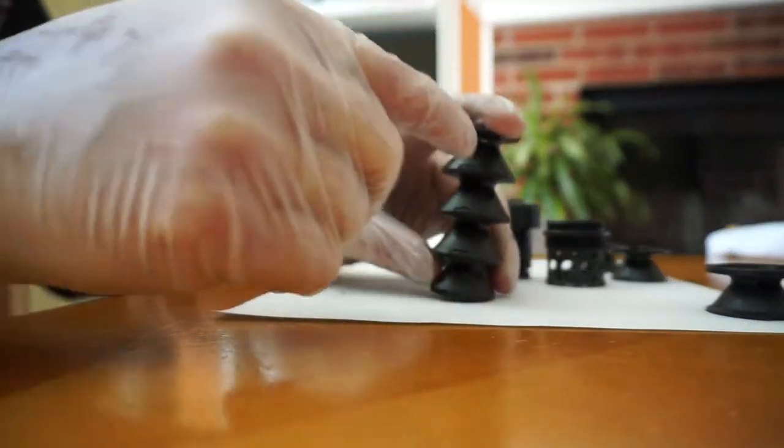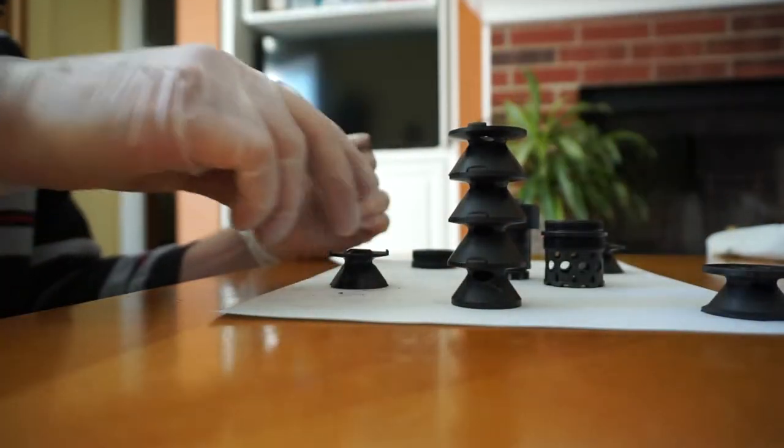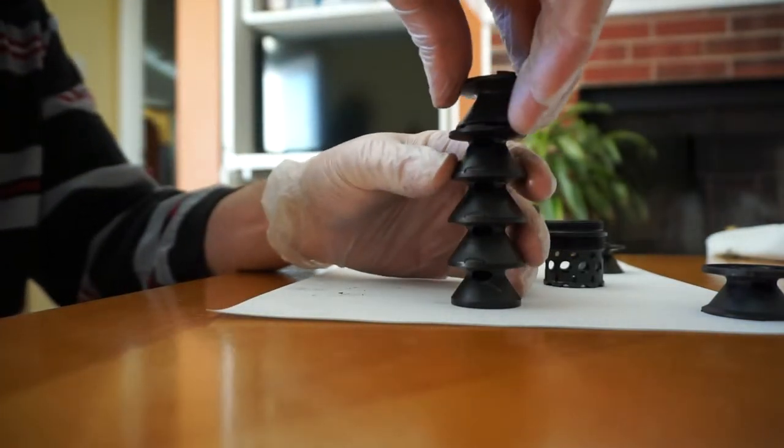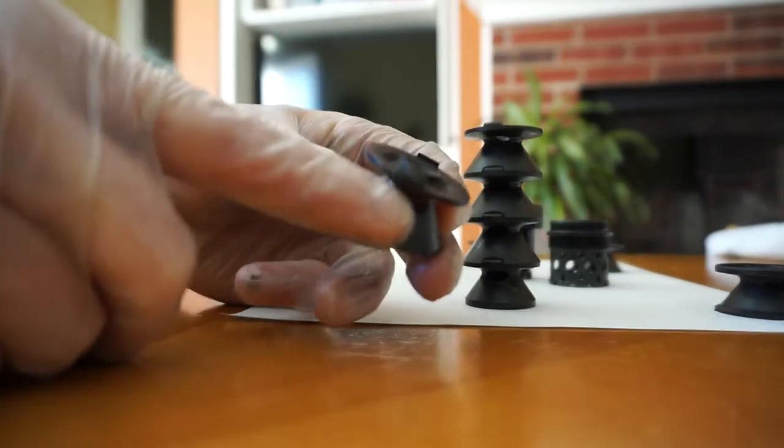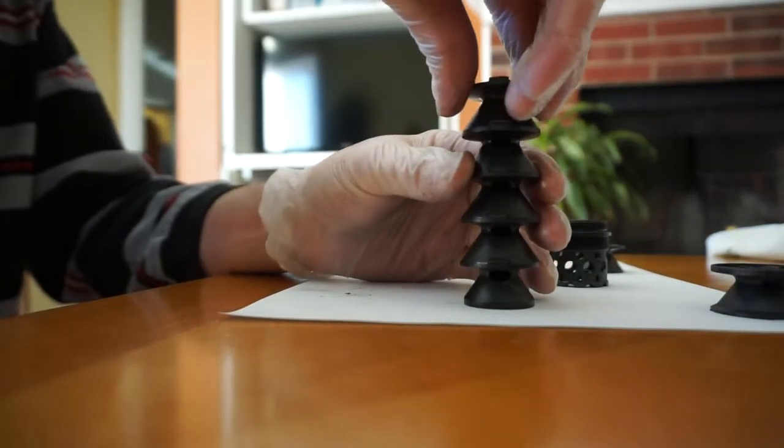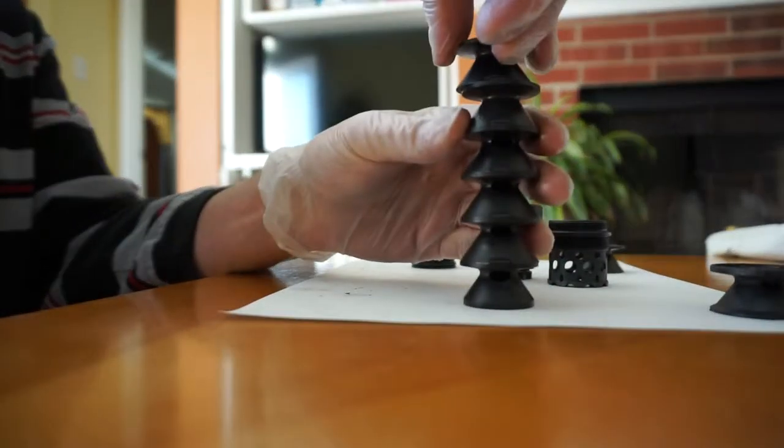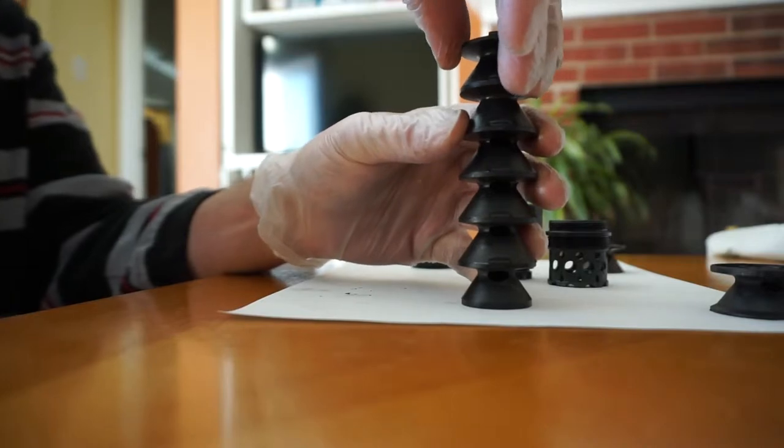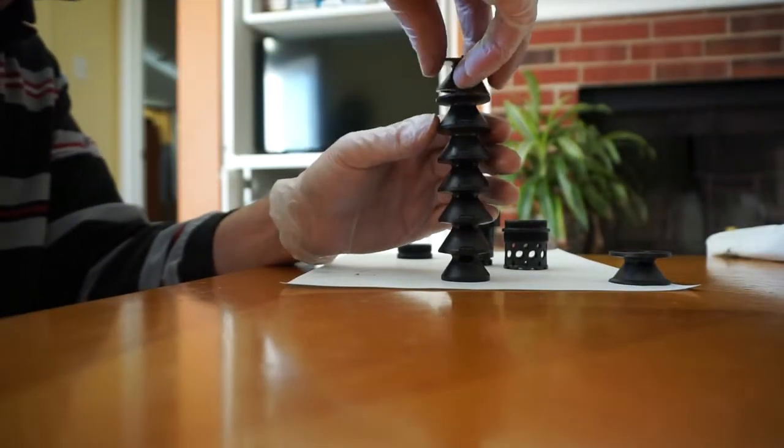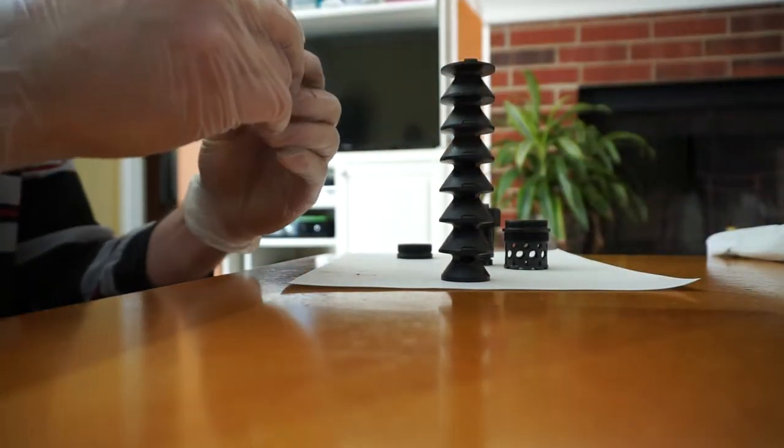Now four on top of that with the holes facing the opposite way. So that hole right there is going to go the opposite way of these holes. One, two, three, and then the stainless steel is four.